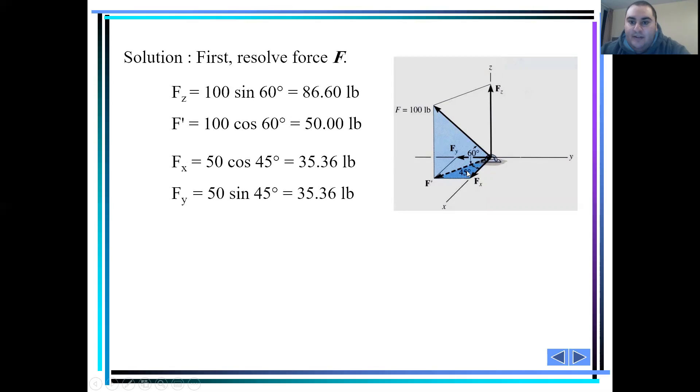So, our fx is going to be f-hat cosine 45, which we found out f-hat is 50 times cosine 45, giving us 35.36. This is the fx component. And our fy is f-hat 50 pounds times sine 45.